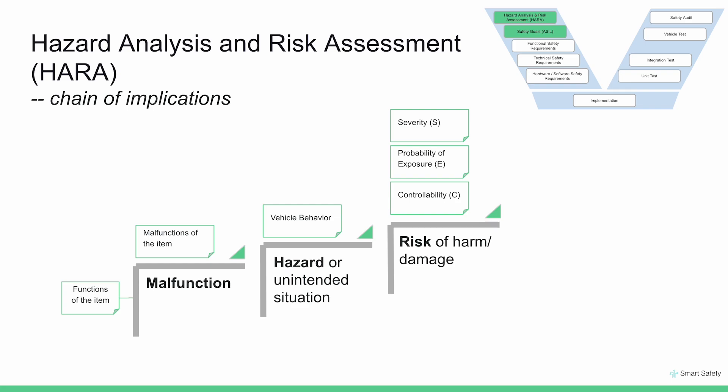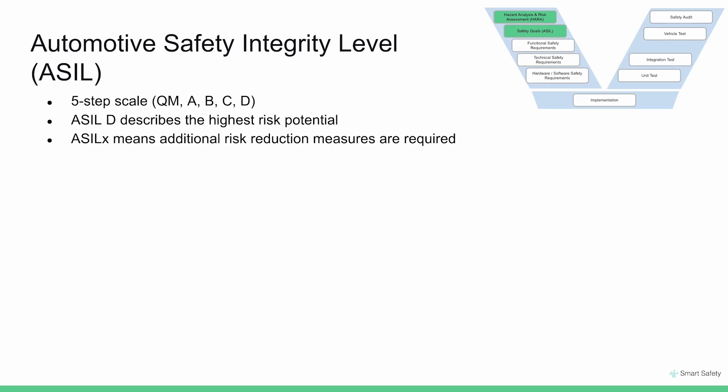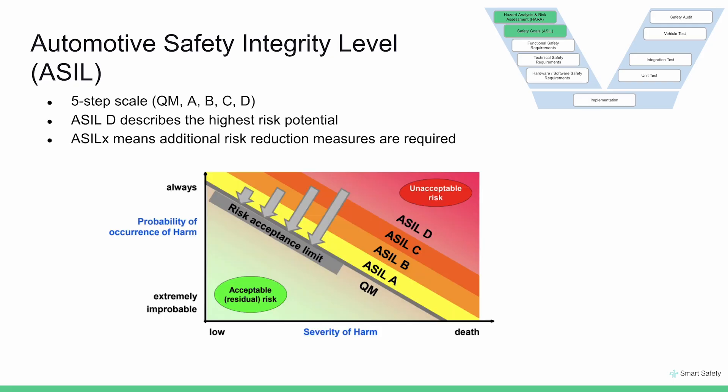Based on the classification of severity, probability, and controllability, you define your risk level, which is denoted by ASIL. ASIL stands for Automotive Safety Integrity Level and it's a five-step scale, going from QM — quality management — to ASIL D, which is the highest risk level. Based on the risk level, we define safety mechanisms or features to reduce that risk, which are a combination of both hardware and software.